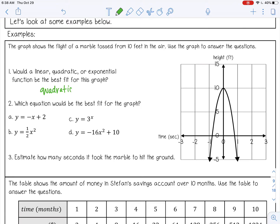Remember that U shape is always a quadratic parabola. Number two says, which equation would be the best fit for the graph?